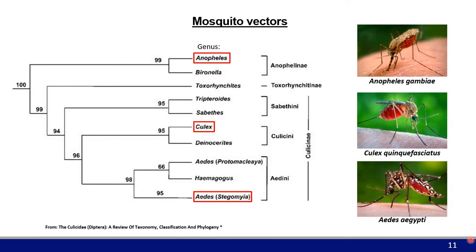There are more than 3,000 species of mosquitoes, and only a few are important as vectors for human pathogens. The most important genera of mosquitoes as vectors are Anopheles, Culex, and Aedes. There are other vectors in the Sabethes and Haemagogus groups, but those mosquitoes usually don't feed on humans — rather on non-human primates, so they can be important in causing spillover events from the jungle, for example transmitting yellow fever virus between non-human primates.